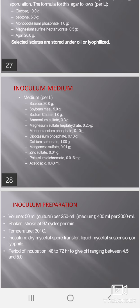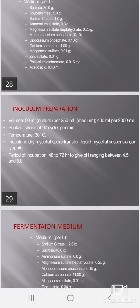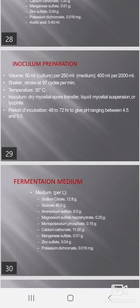Shaker speed: 97 cycles per minute; temperature: 30°C. Inoculum is prepared as dry mycelial spore transfer, liquid mycelial suspension, or lyophilized culture. Period of incubation: 48 to 72 hours to give a pH ranging between 4.5 and 5.